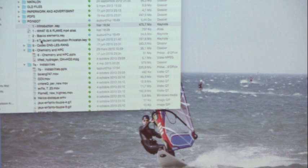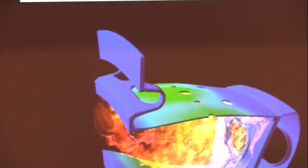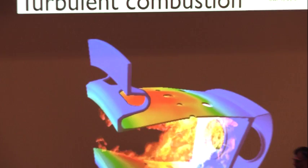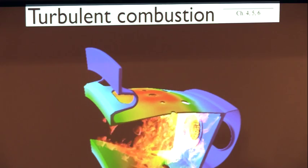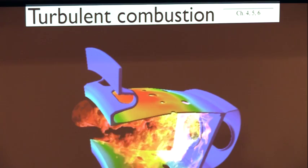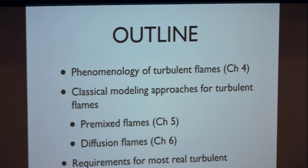Now, turbulent combustion is really everything we've said before, except that the flow itself is turbulent. We have two choices: either give up, or accept that you need to make assumptions — obviously the turbulent combustor problem cannot be solved with the same precision as laminar flames. I'll talk about the phenomenology of turbulent flames, modeling of premixed and diffusion flames, and what happens in real systems. Unlike laminar flame theory, this is a field that is moving every day, and many of the things I'm going to say are controversial.